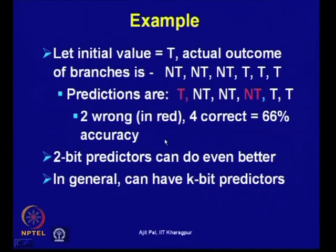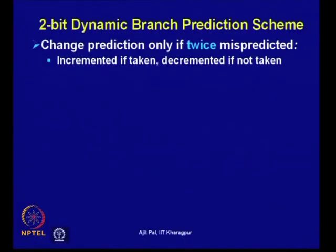How can we improve this prediction? Instead of a single bit, we can go for a 2-bit predictor, which can do even better. This is a special case of a k-bit predictor. For the sake of simplicity, we shall consider the 2-bit predictor, see how it performs, and later examine whether increasing the number of bits provides any benefit.